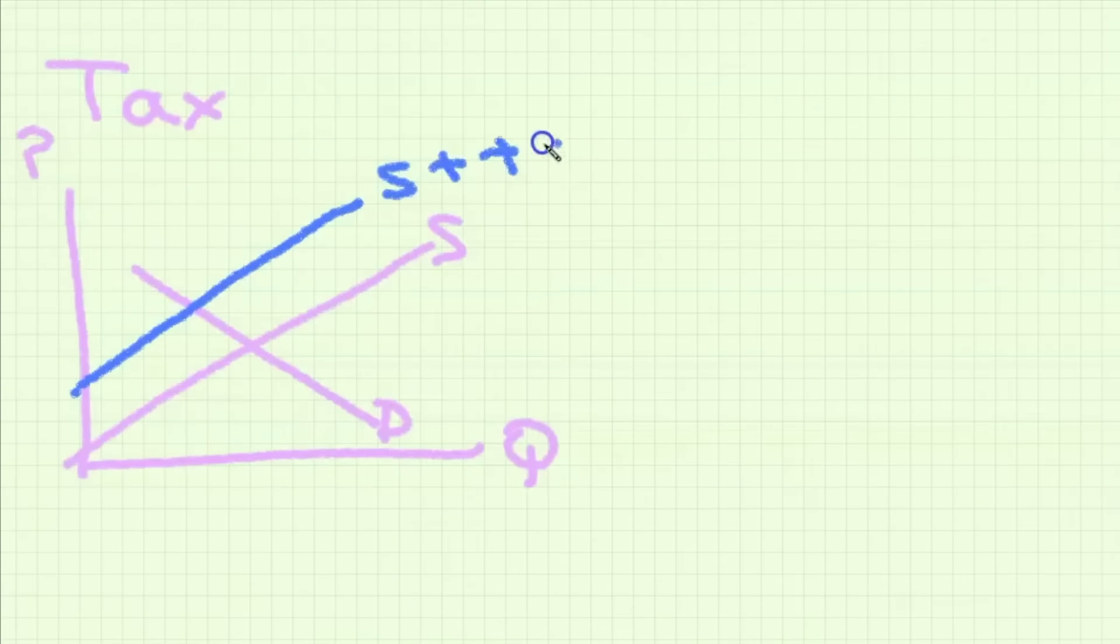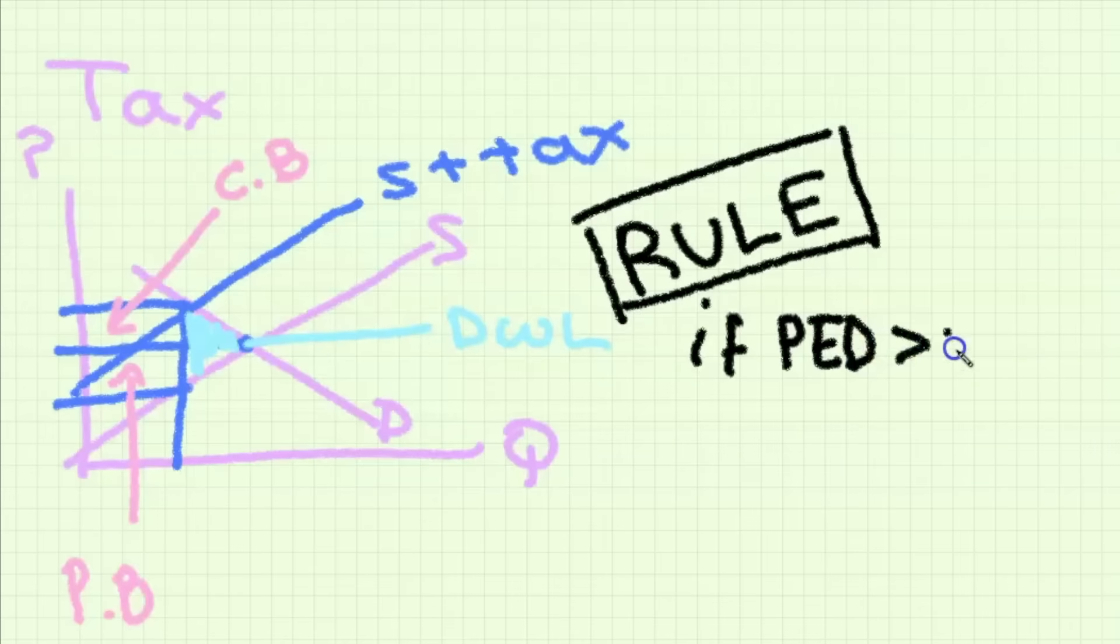If we want to show that there's been a tax, a tax represents an increase in the cost of production for a firm so therefore the supply curve has to shift to the left. This leads to a deadweight loss because of inefficiency and also a government tax revenue which is the rectangle here. The tax burden is not distributed equally. We see here that the other part of the rectangle is the consumer burden and the lower part is the producer burden.